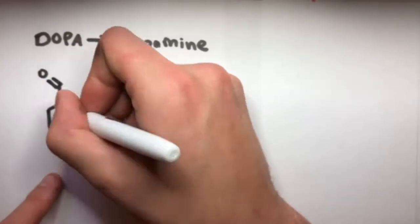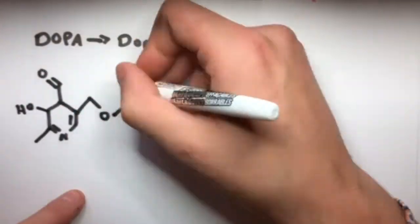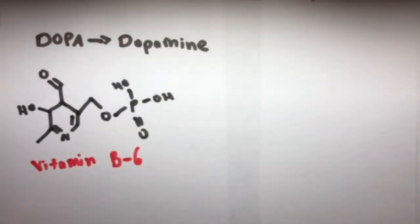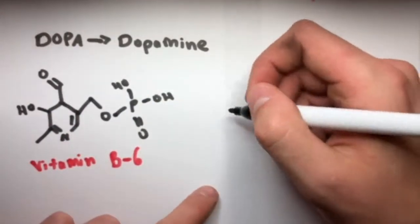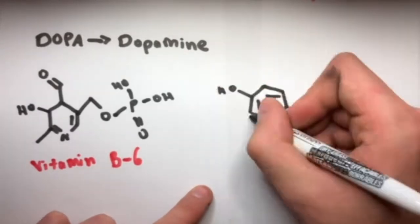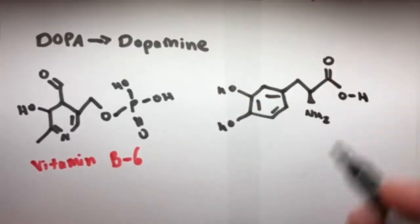The next step of the synthesis involves changing DOPA into dopamine. In order to obtain this, DOPA must be decarboxylated through the use of cofactor vitamin B6. A base in the body can easily extract the proton from the hydroxyl group, which then causes this decarboxylation on the DOPA molecule.